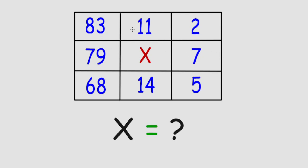We have 83, 11, and 2, and the first box, 79, x and 7, and 68, 14, and 5. These numbers are all over the place.